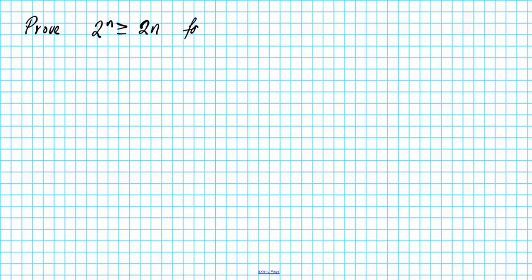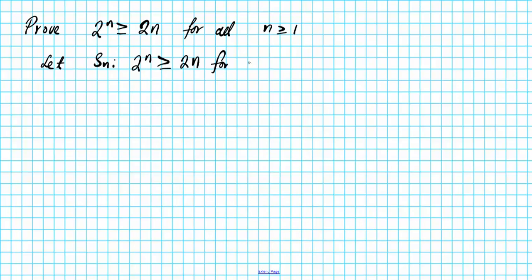So this is what we are asked to prove: that 2 to the n is greater than or equal to 2n for all positive integers n greater than or equal to 1. So let the statement Sn be 2 to the n greater than or equal to 2n for all n greater than or equal to 1. If we can show that Sn is true, that basically accomplishes the goal of the proof.